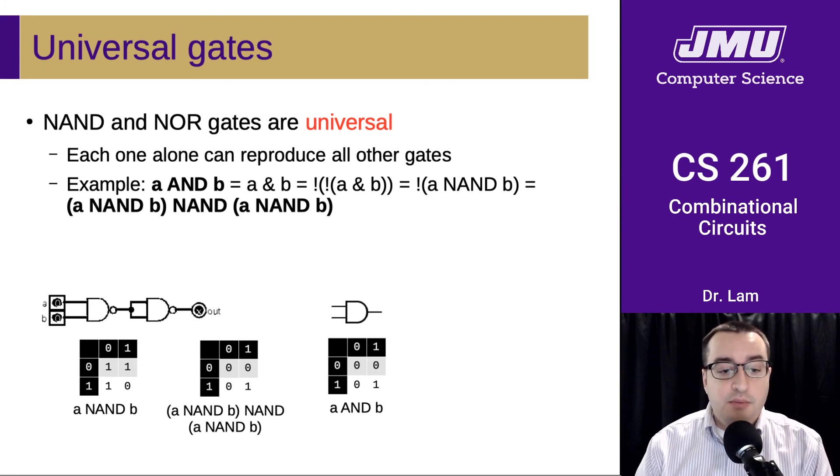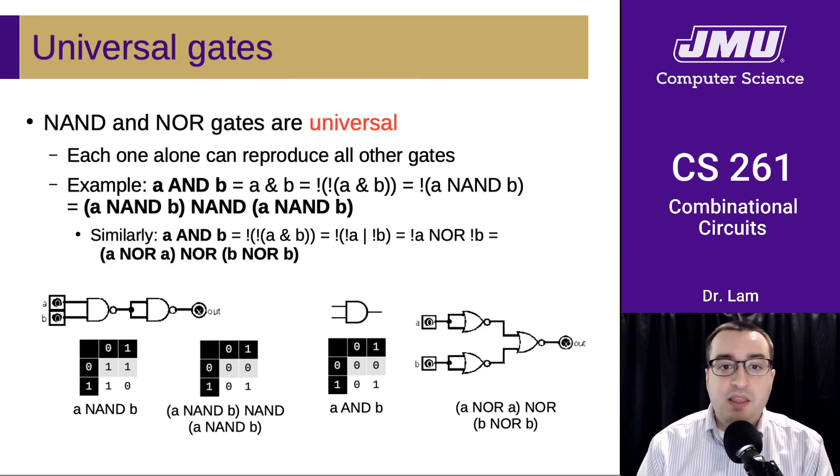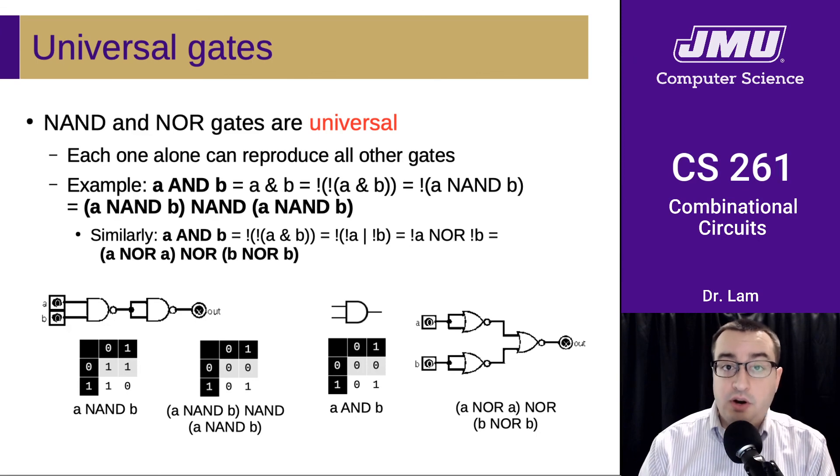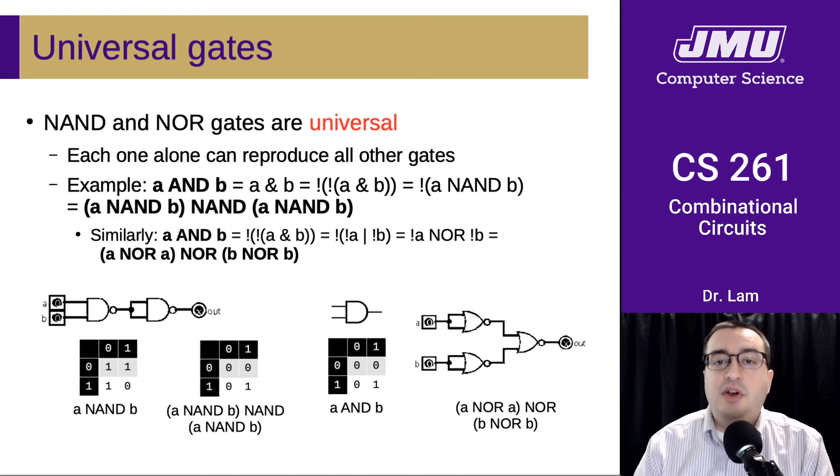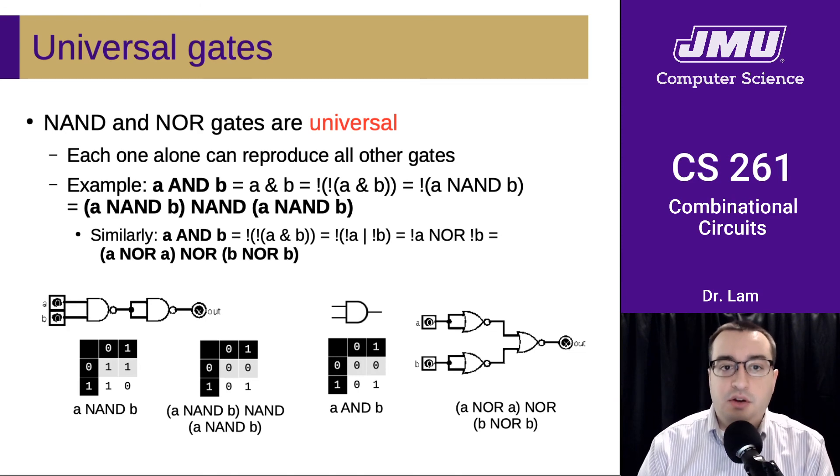So here's one example here. Here's building an AND using NAND. So you take A and B, you put it through a NAND, you take that result, and you double it, or you duplicate it or split it, and then put it through another NAND. And again, if you look at the truth tables, they're equivalent. And so we've built an AND gate out of two NAND gates. Here's another example where we built an AND gate out of three NOR gates. And you can do this for all the other gates. And like I said, it would be a useful exercise for you to go through and convince yourself that you can recreate all the other gates using one of these.